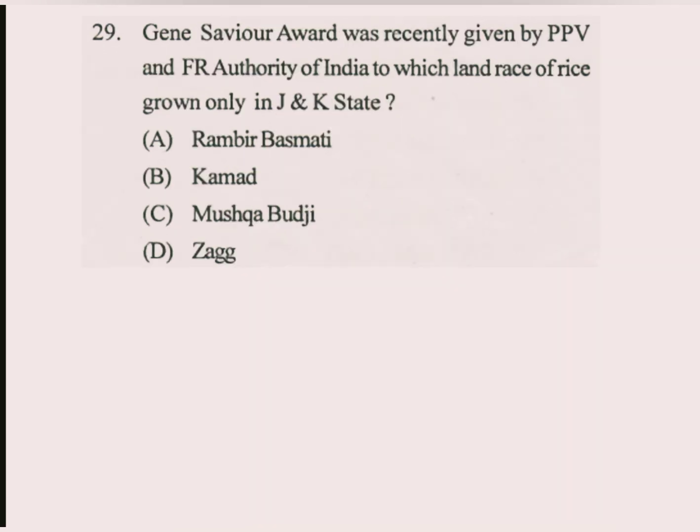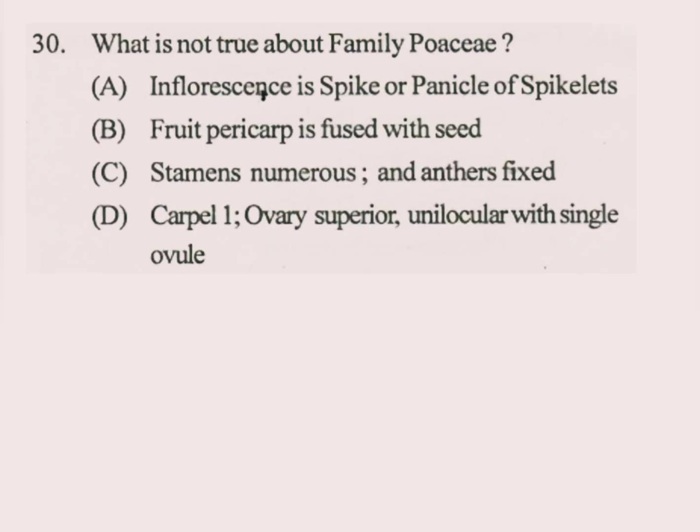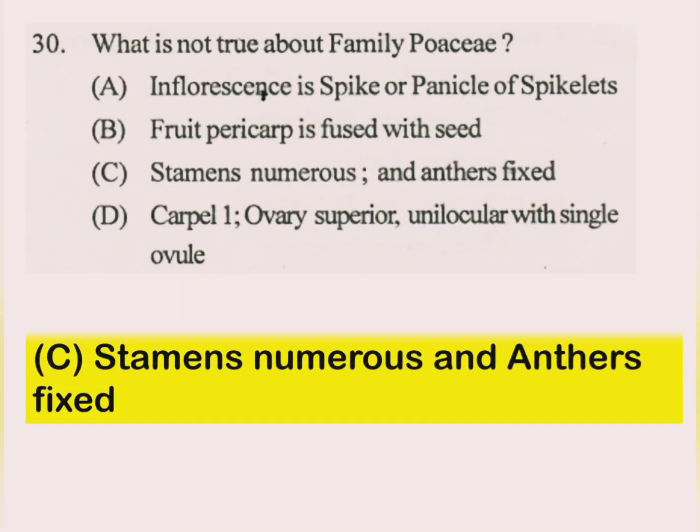Question number 29. Gene Savior Award was recently given by PPV and FR Authority of India to which land race of rice grown only in J&K state? The answer is Mushk Budji. Question number 30. What is not true about family Poaceae? The answer is C part: stem is numerous and internodes solid.